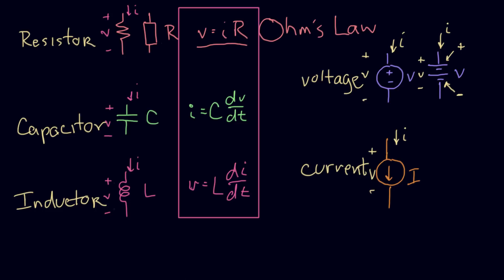So these are the five components we're going to use to build circuits. One final point: these are ideal components — ideal current sources, ideal voltage sources, ideal resistors, capacitors, and inductors. These are mathematically perfect things that we try to build in the real world, and we'll come very close. We now have a wonderful set of equations: V = IR, I = C·dV/dt, V = L·dI/dt. These ideal equations will produce all kinds of really cool circuits. In the upcoming videos, we'll look at each component individually and then start combining them into interesting circuits.